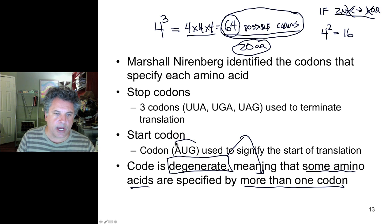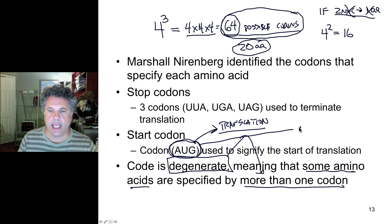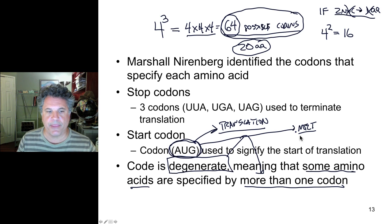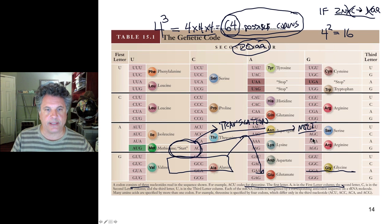The AUG codon is very specific — it always indicates the beginning of translation. When the messenger RNA is read, an AUG codon marks the start of translation. AUG encodes the amino acid methionine — a modified methionine in the case of prokaryotes, but methionine nonetheless.